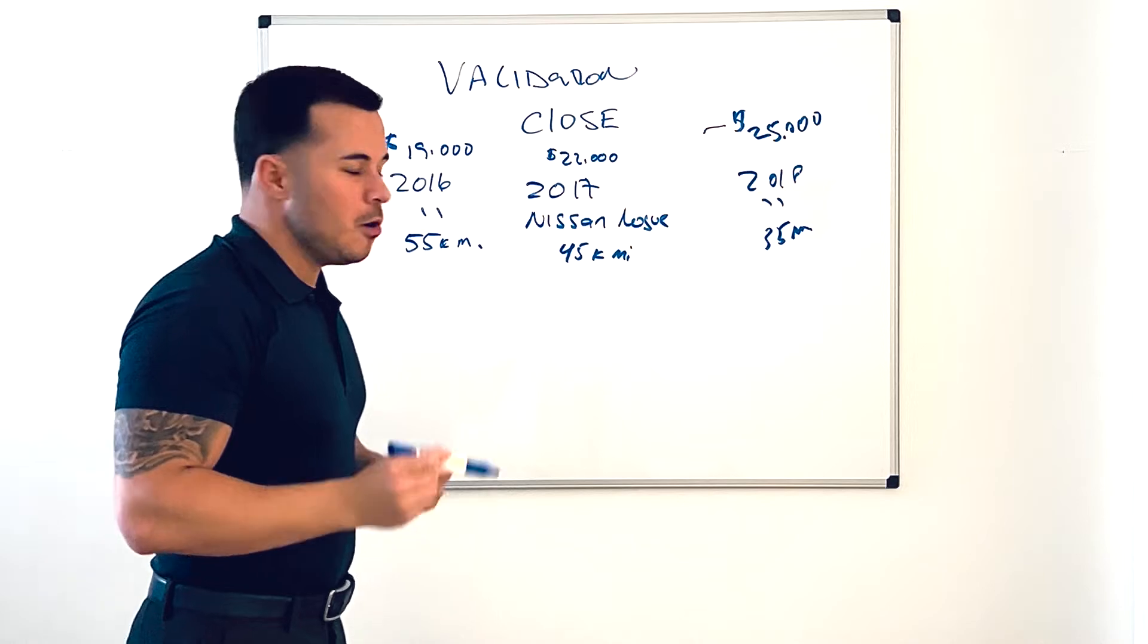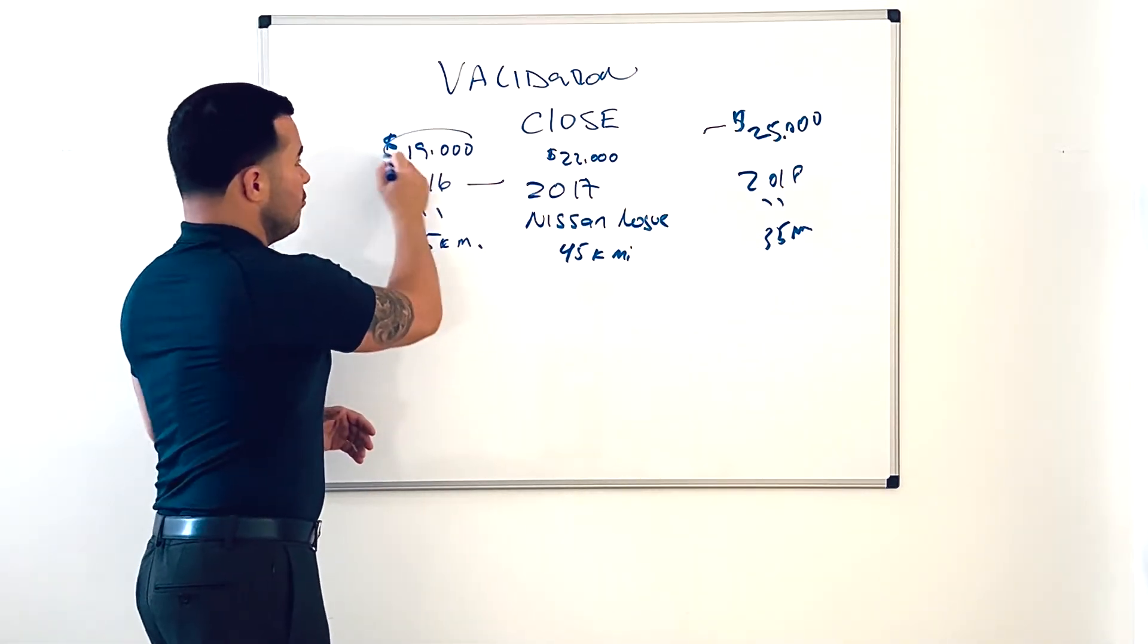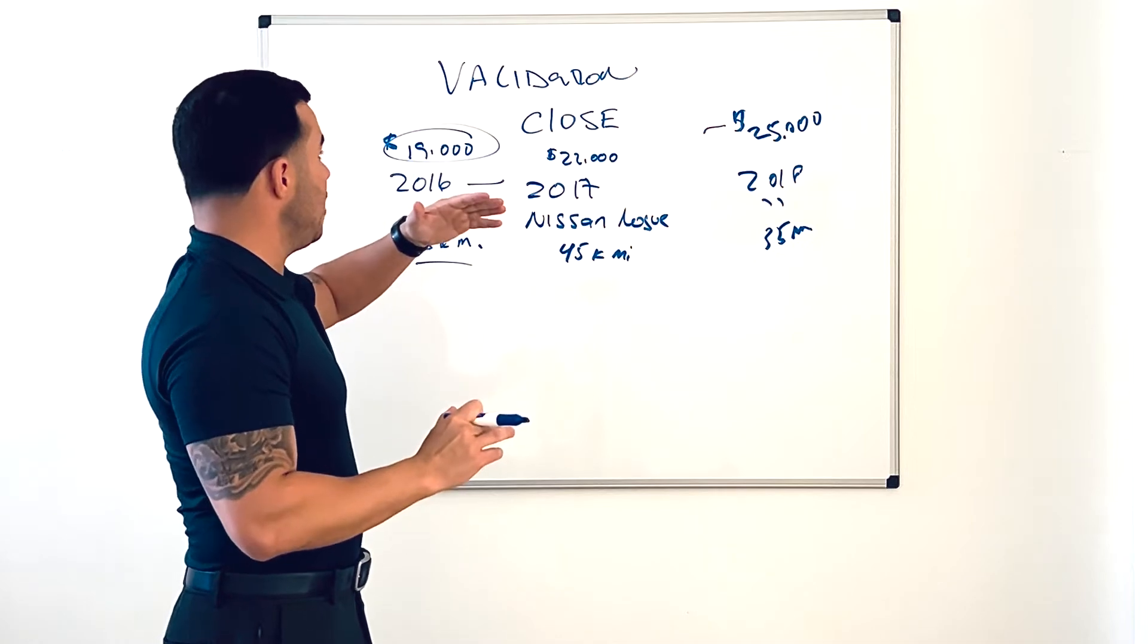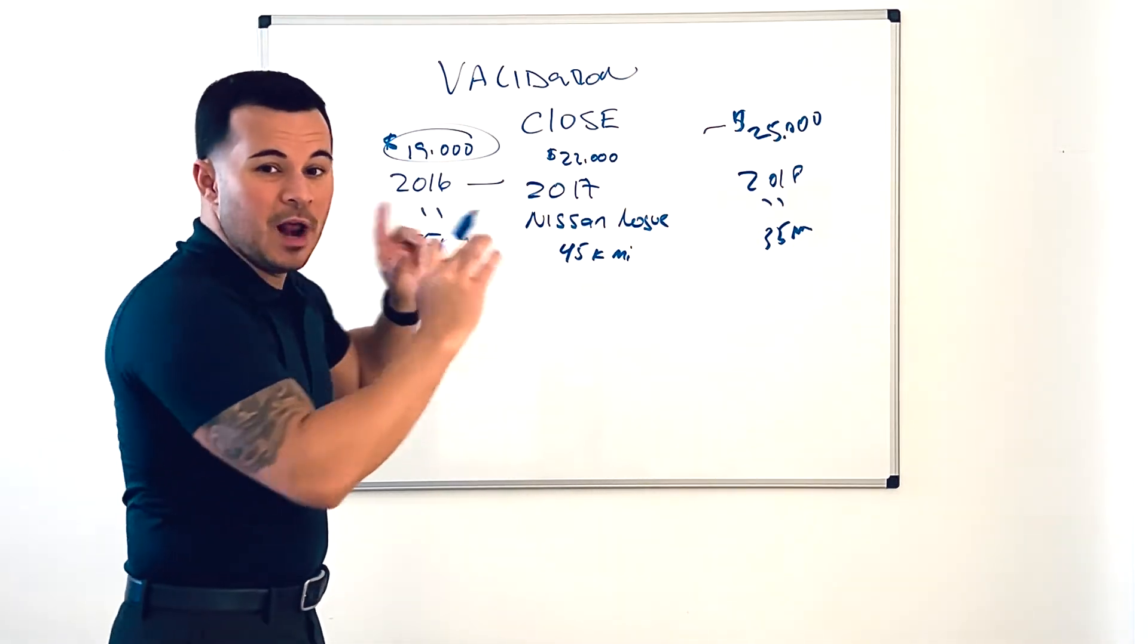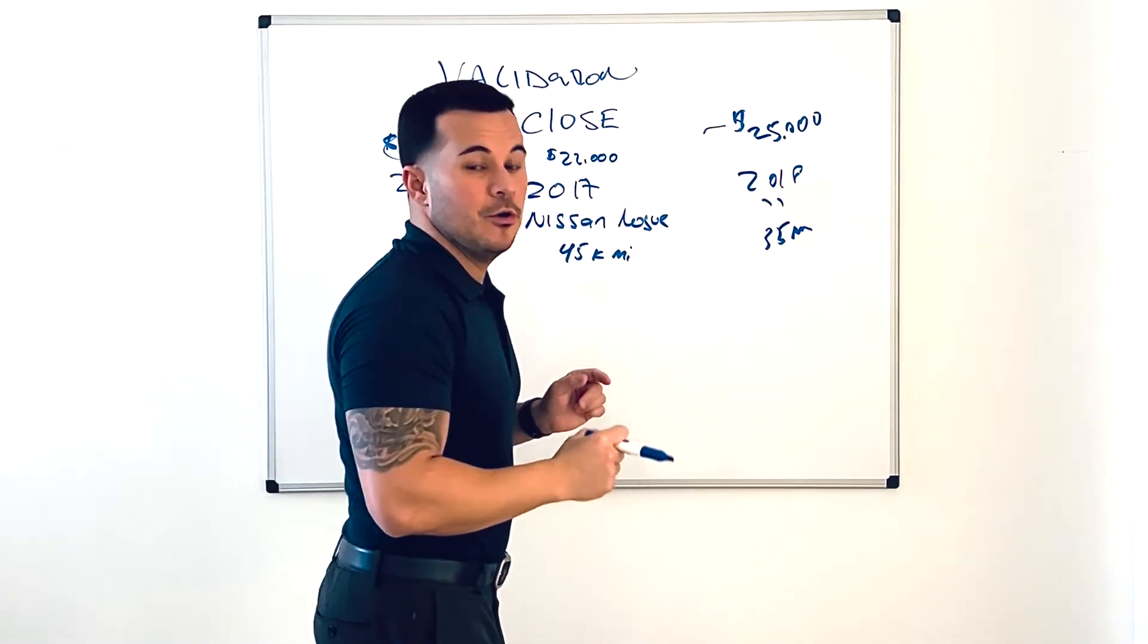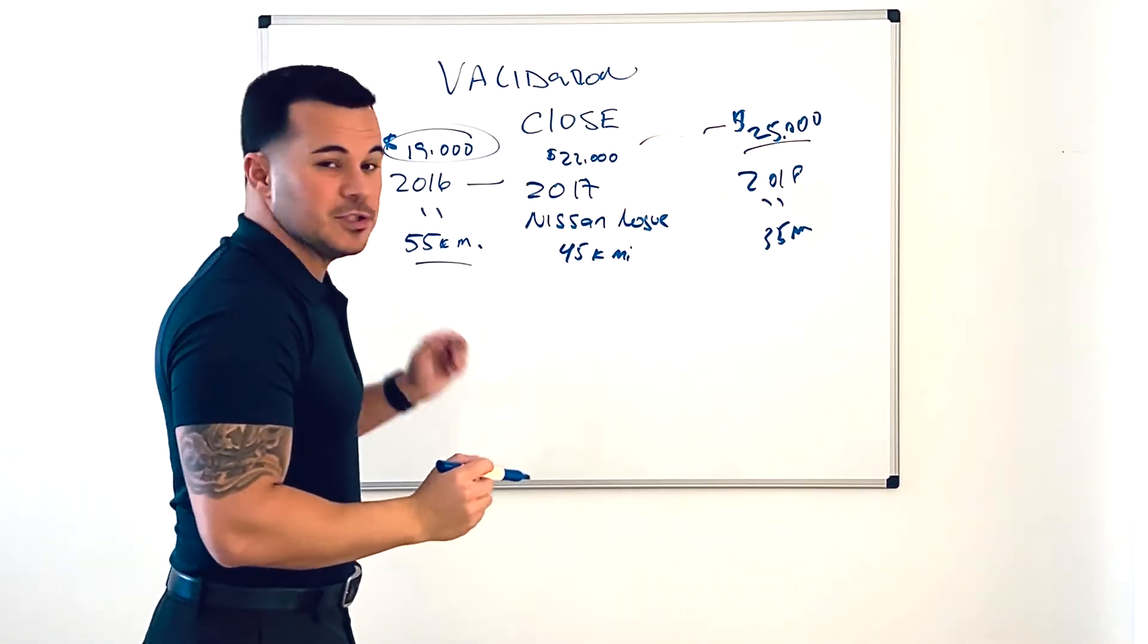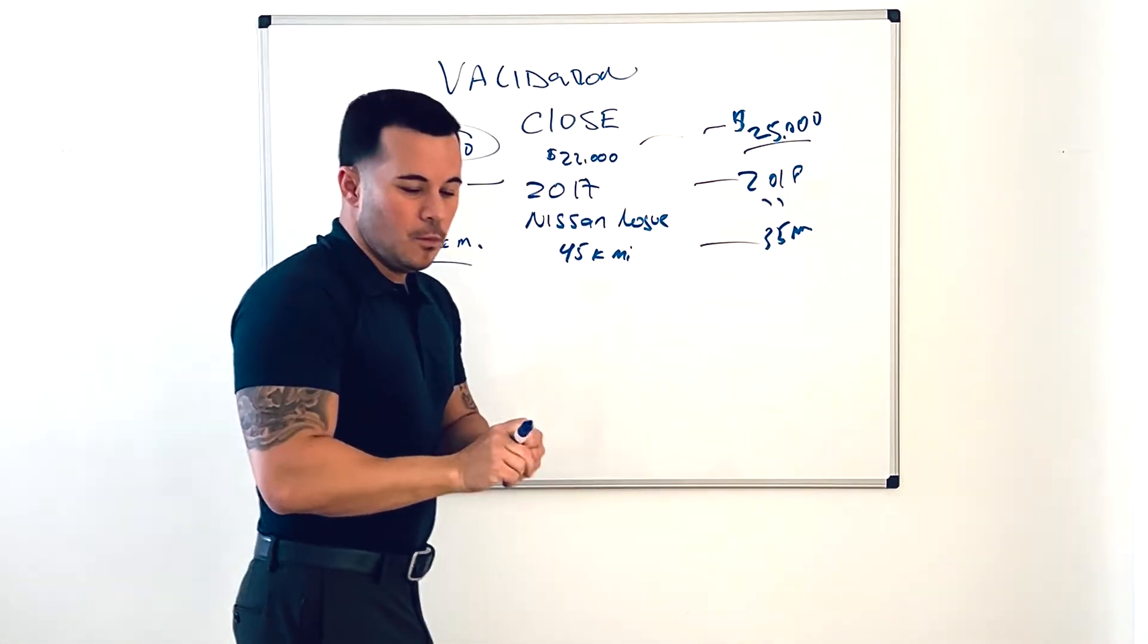So what I did was I went a year older, $3,000 less, roughly 10,000 more miles. You can make it 15,000 more miles. You can go $2,000 less. You don't have to go $3,000, but that's what I did. Whatever you do when you go to the year older, you have to do the same difference on the year newer. So then I went up $3,000 more in price rather than $3,000 less, a year newer, and 10,000 less miles. Once again, this is the validation close.